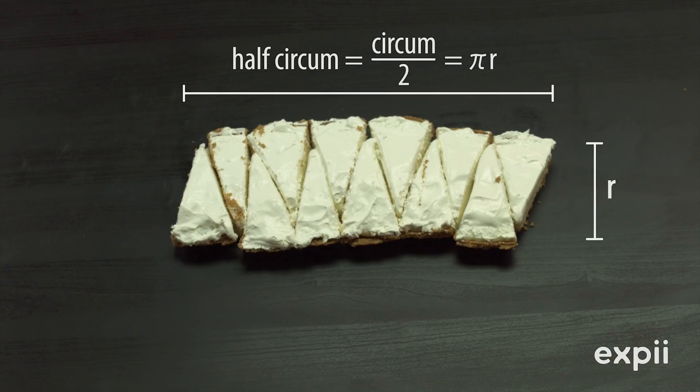What's the area of the rectangle? Oh, I know this one! Length times width, which makes pi r squared! Holy s**t! That's the area of the circle!